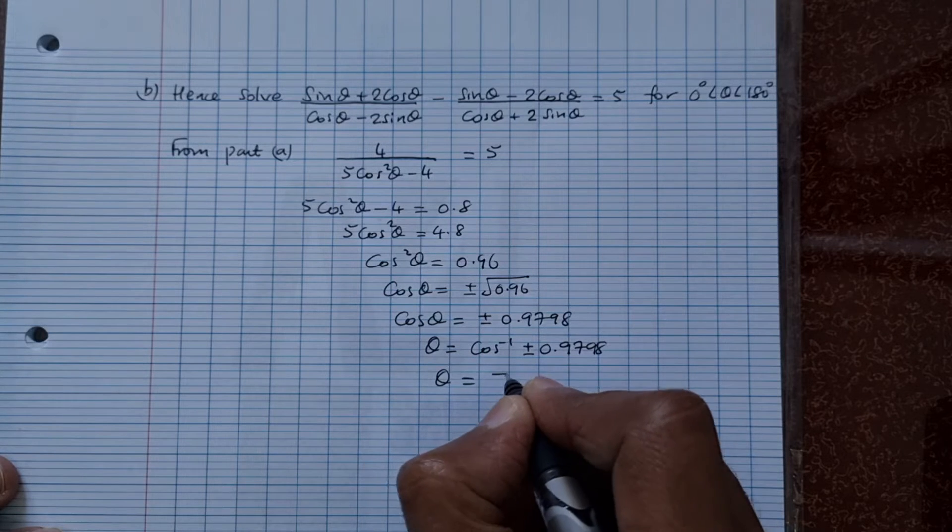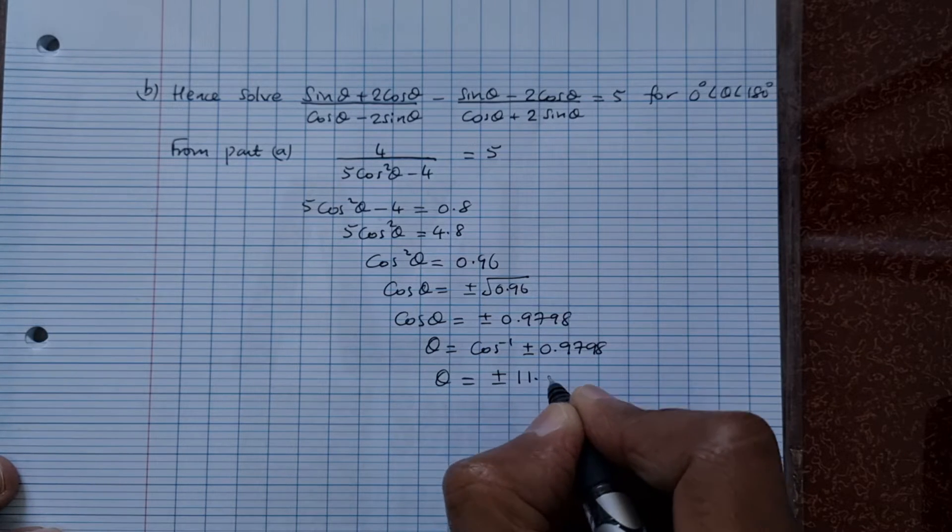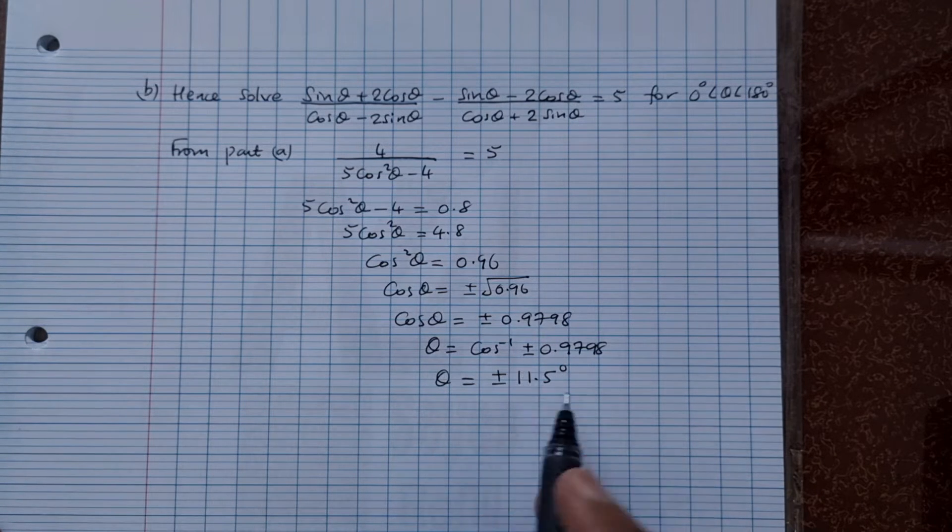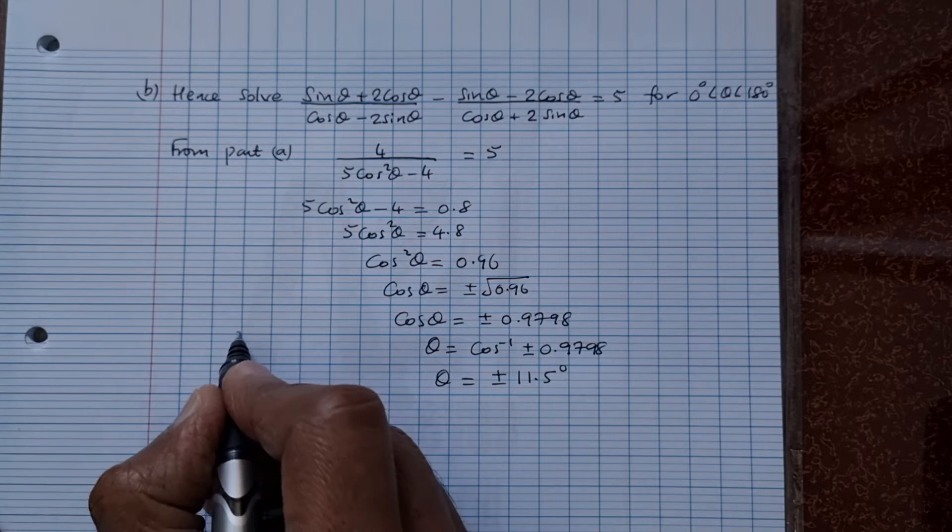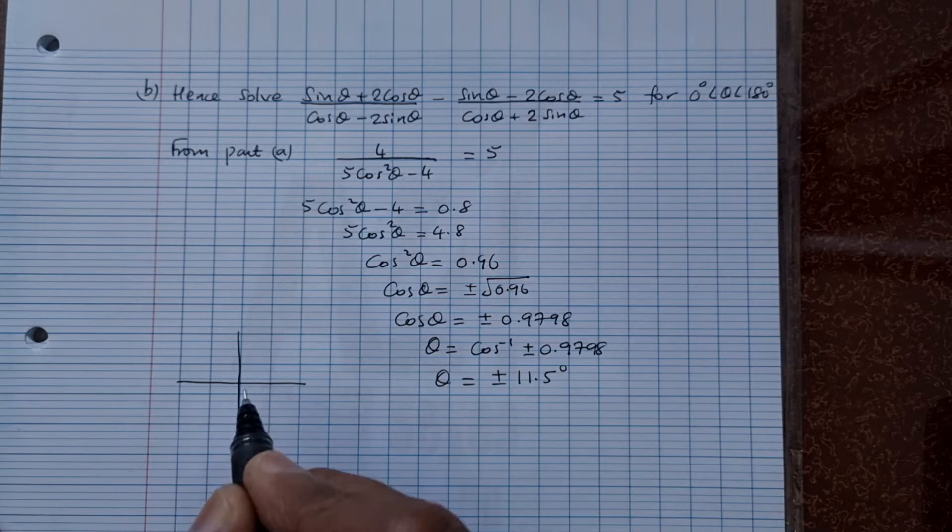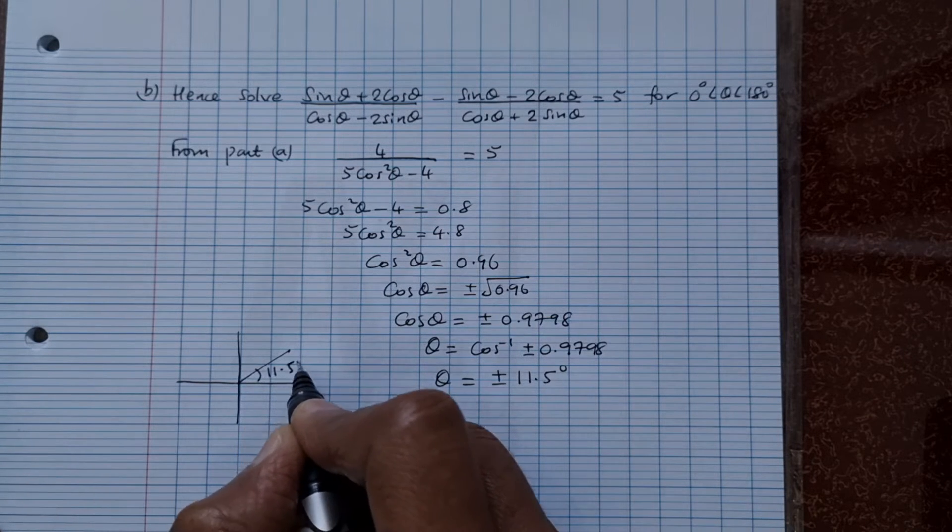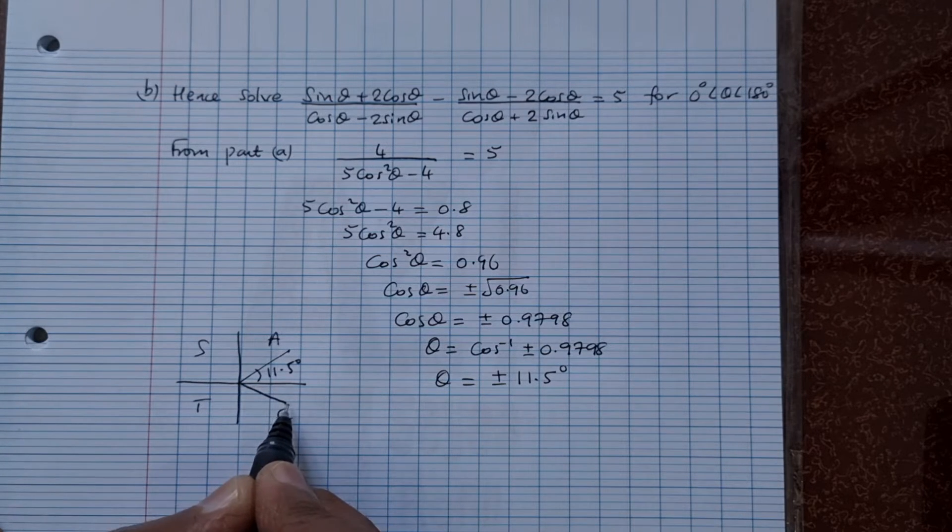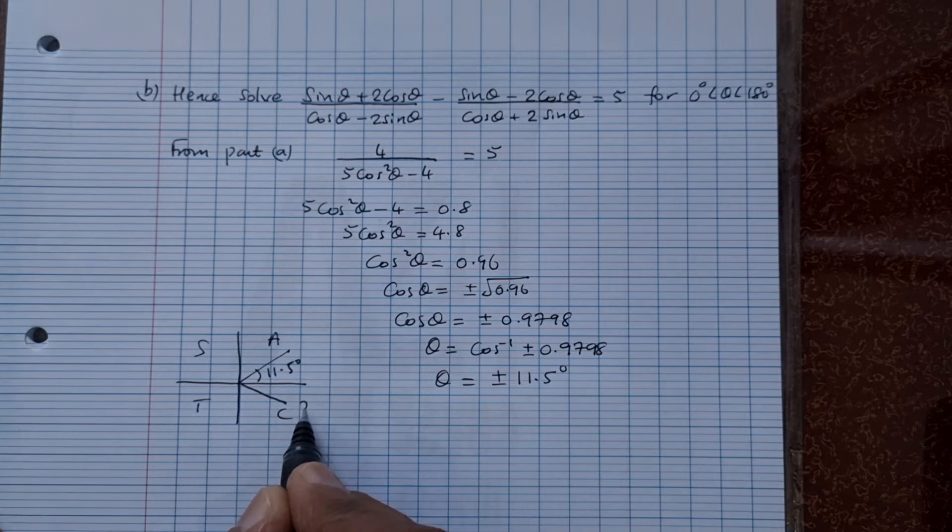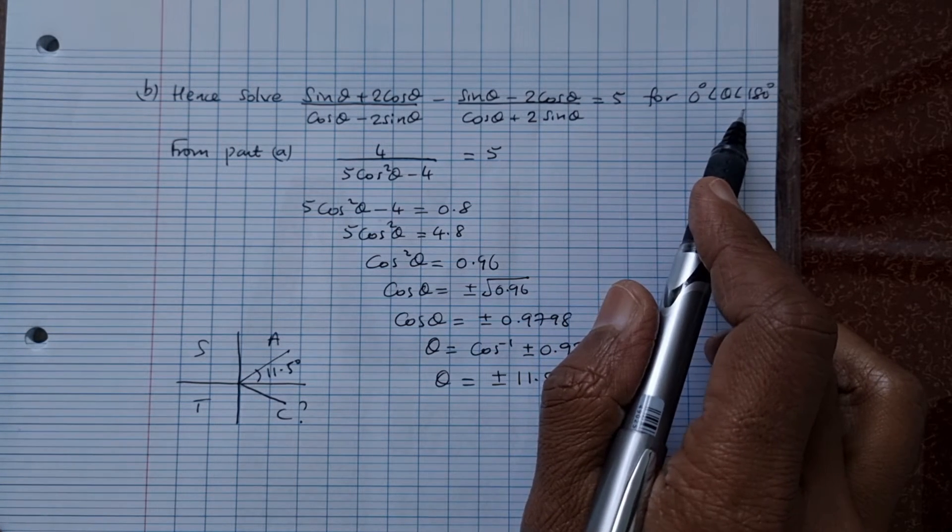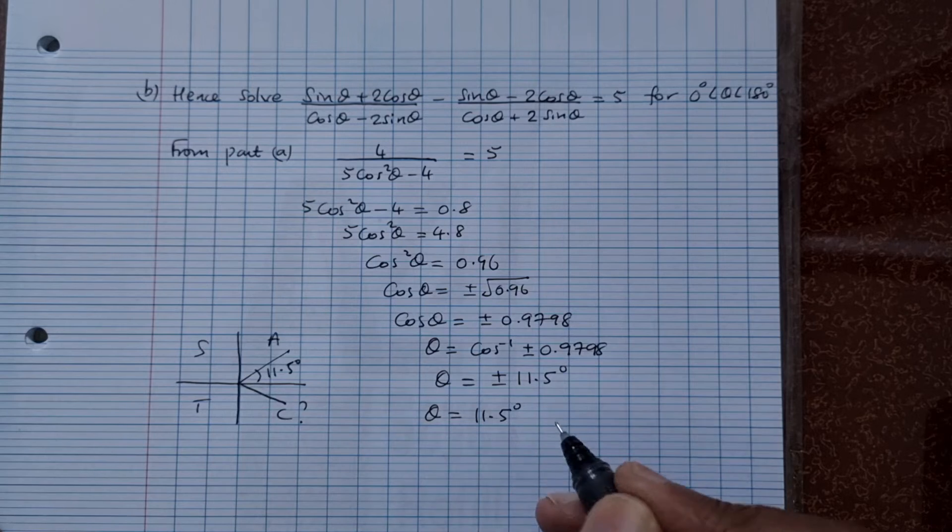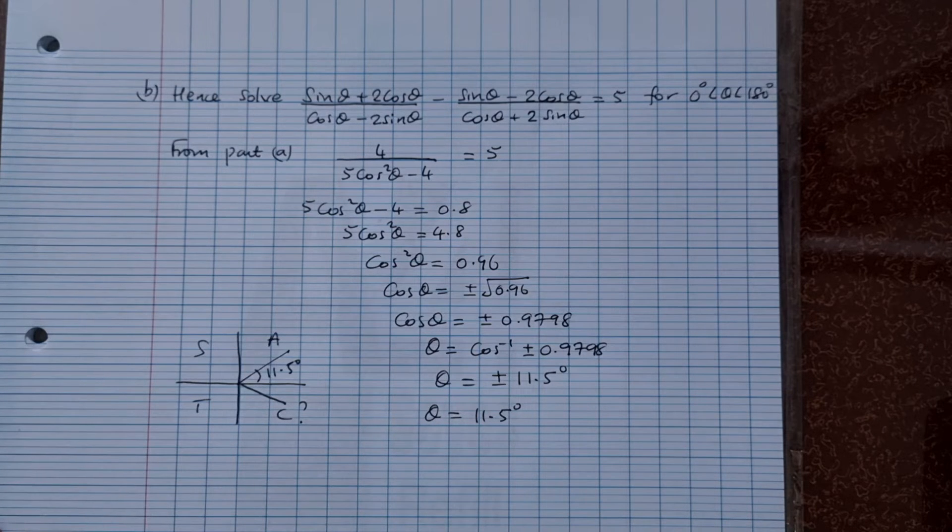So, θ is equal to plus or minus 11.5 degrees. Now, we can take the positive value first. So, if we take the positive value for cos, and we got 11.5. That's one answer already. The second positive value will be in this quadrant. But we're not looking for this quadrant. Why? Because it should be 0 to 180 degrees. So, θ is equal to 11.5. And the next positive angle will be greater than 180 degrees. And therefore, we don't take it.